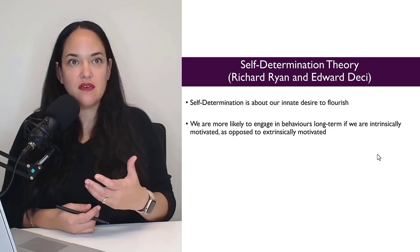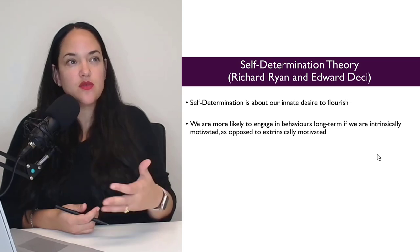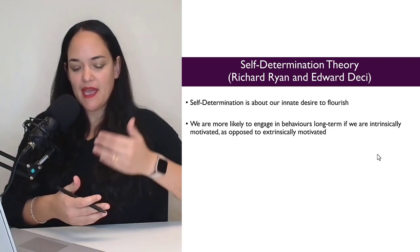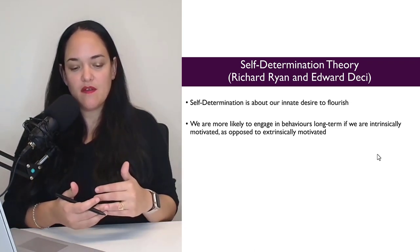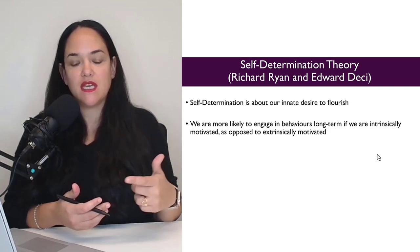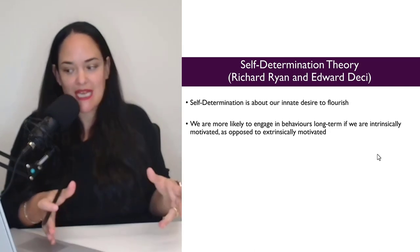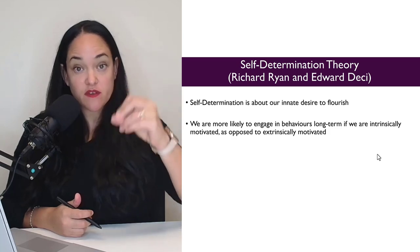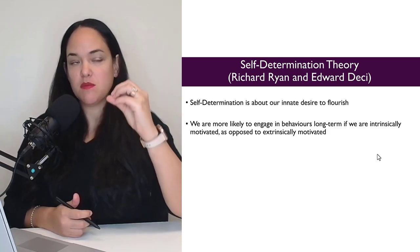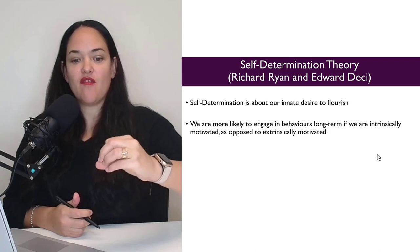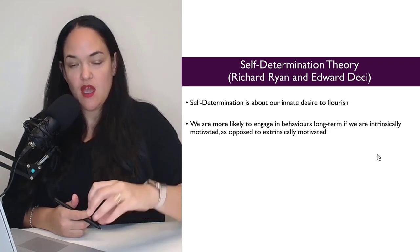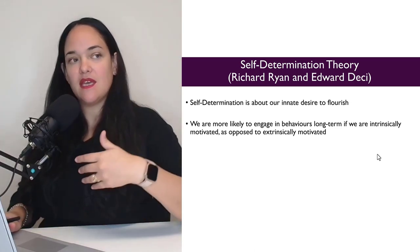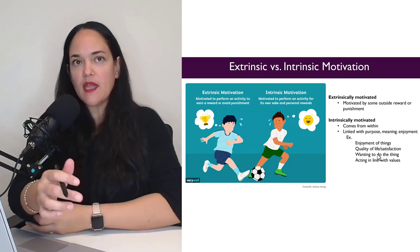Self-determination theory is really about our innate desire to flourish — that human tendency to want to enjoy life to the maximum and to do things in line with living an epic life. One of the main tenets is that we are more likely to engage in behaviors long-term, sustainably, if we have more of what we call intrinsic motivation.